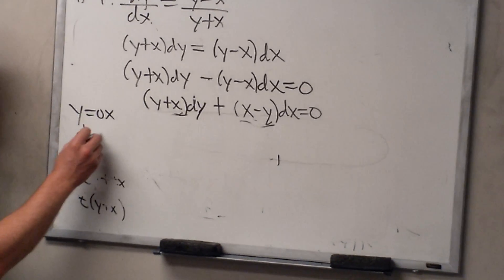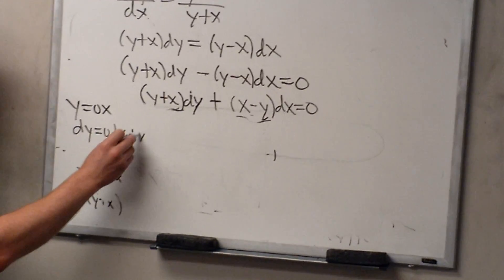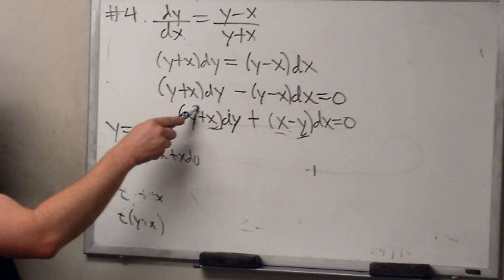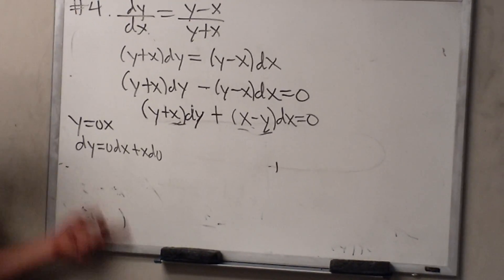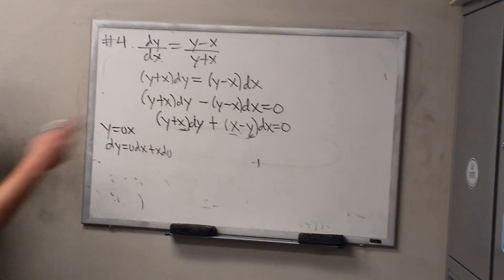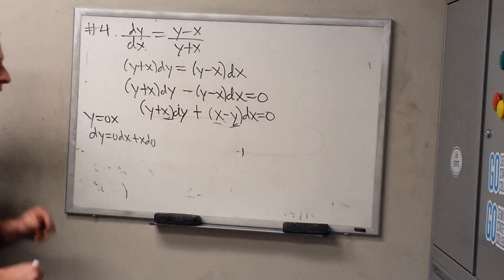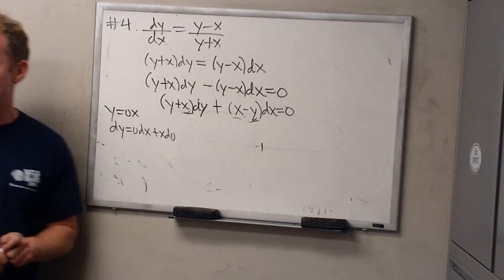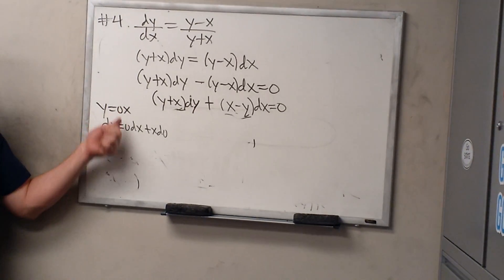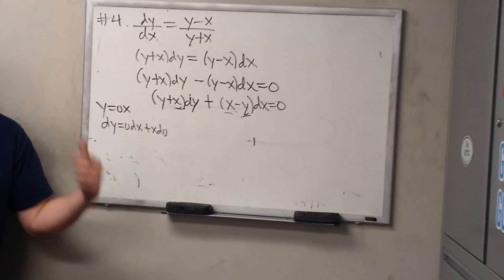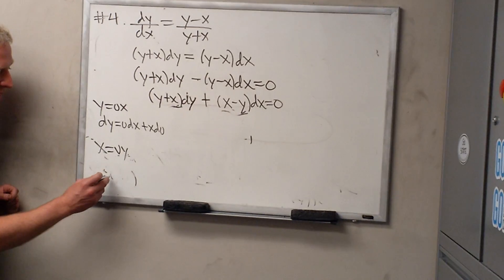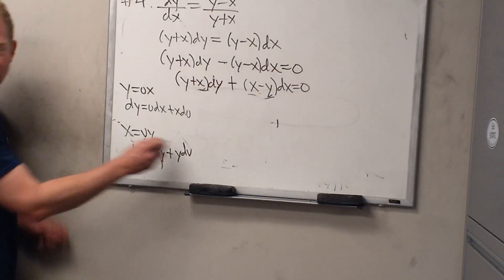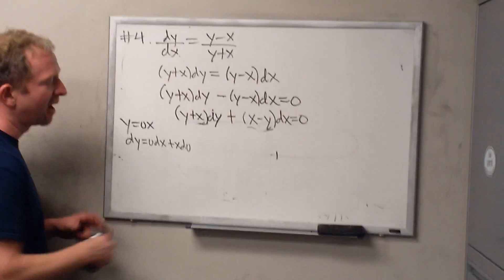So now we have to compute dy. So dy is u dx plus x du — it's a product rule, just alternate them. So if it was x equal vy, it would be dx equals v dy plus y dv. Just alternate them. Just to make a point on homogeneity: if there was a y squared here, would it be homogeneous? No, it wouldn't — because if you plugged in tx, you wouldn't be able to pull all the t's out. So now we plug everything in.